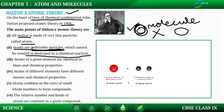Atoms of a given element are identical in mass and chemical properties. For example, if we take two hydrogen atoms, they are going to have similar chemical properties and the same mass.